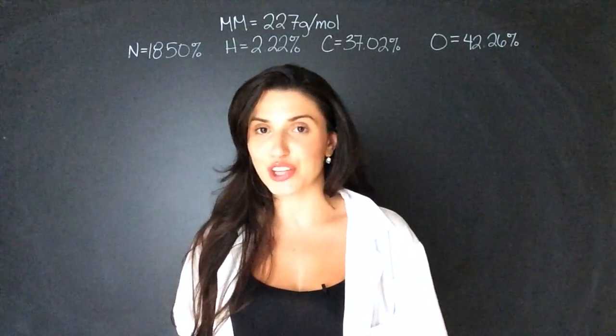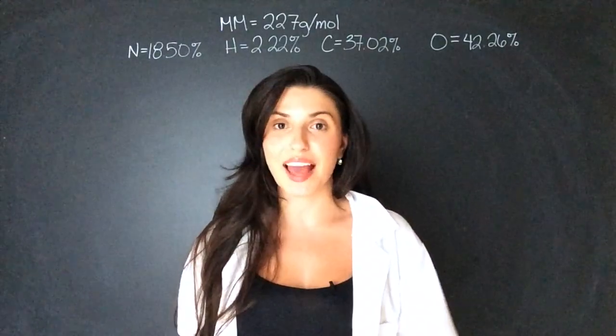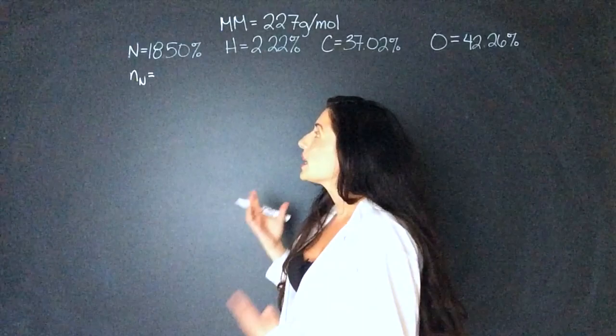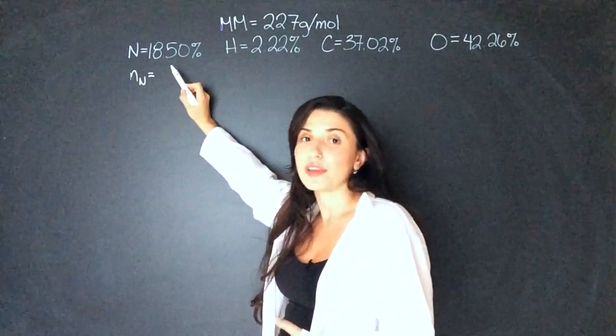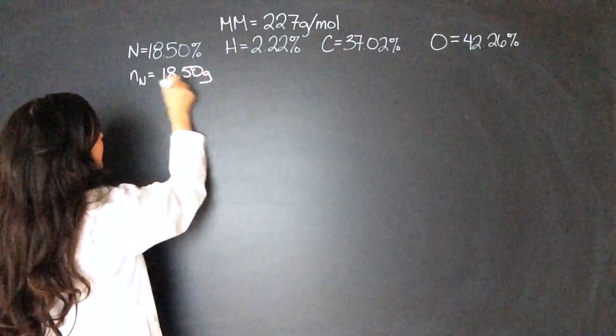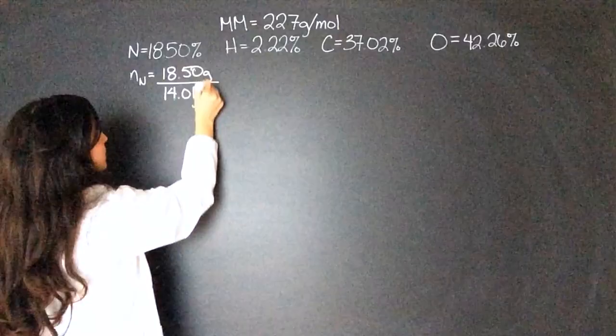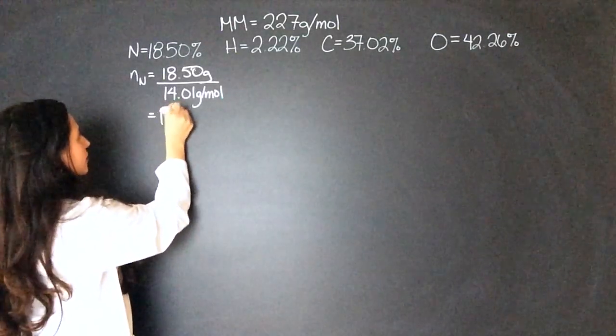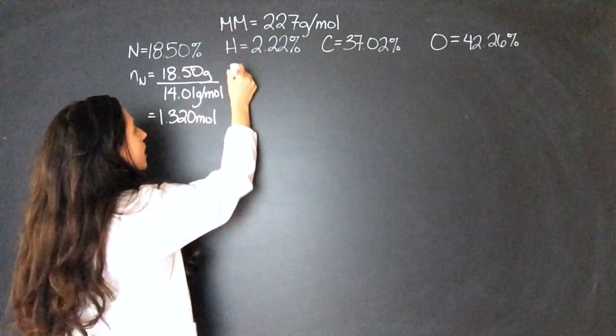Remember the equation I taught you in a previous video? Moles equals mass over molar mass. If you need a review on that, I'll link it here. The moles of nitrogen equal the mass over the molar mass. Because we're pretending there's 100 grams in this sample, we can say that there's 18.5 grams of nitrogen. 18.50 grams divided by the molar mass of nitrogen, which is 14.01 grams per mole. That equals 1.320 moles.